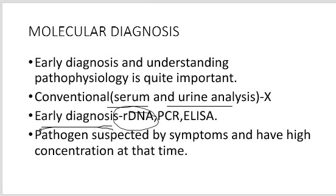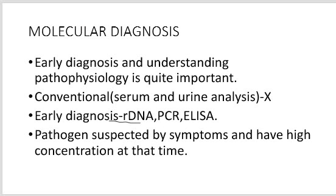For example, recombinant DNA technology — we have been studying about it and know well about its mechanism. We have also considered PCR, that is polymerase chain reaction, and discussed its mechanism. The third most important biotechnological test is ELISA, which simply means enzyme-linked immunosorbent assay. So diseases can be easily diagnosed in early stage with the help of recombinant DNA technology, polymerase chain reaction, and enzyme-linked immunosorbent assay.